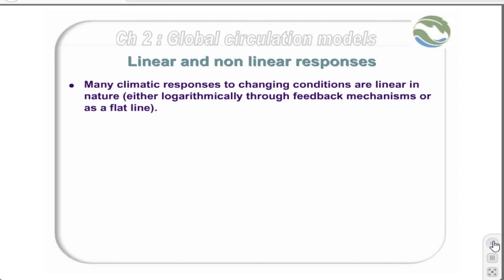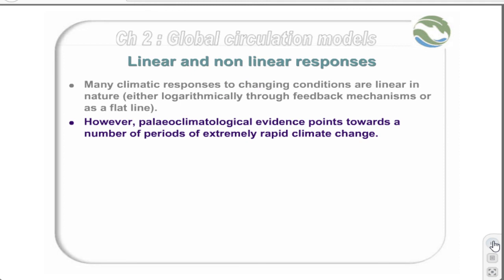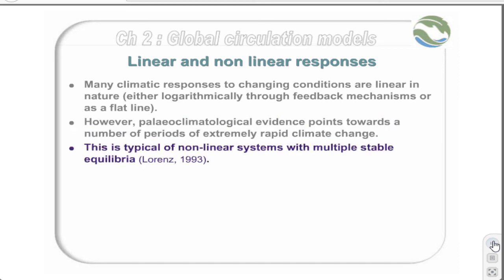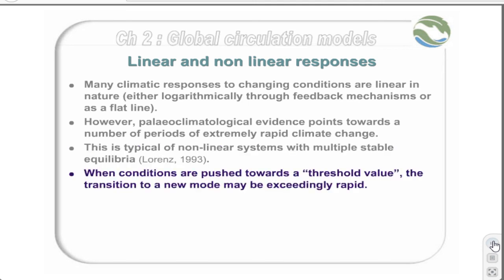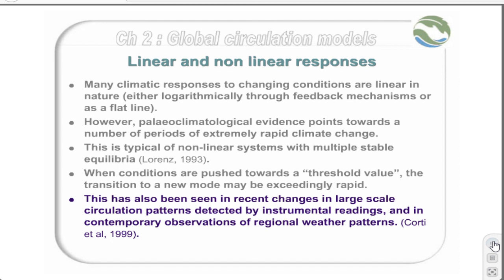Many climatic responses to changing conditions are linear in nature, either logarithmically through feedback mechanisms or as a flat trend line. However, paleoclimatological evidence points towards a number of prehistoric periods of extremely rapid climate change. This is typical of non-linear systems with multiple stable equilibria, as detailed by Lorenz in 1993. In this situation, when conditions are pushed towards a threshold value, the transition to a new mode of operation, or a new equilibrium value, may be exceedingly rapid. This has also been seen recently in changes in large-scale circulation patterns detected by instrumental readings and in contemporary observations of regional weather patterns. Thus, it is entirely possible that certain effects will not follow a linear trend, and we could see rapid shifting of some aspects of the climate.